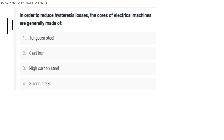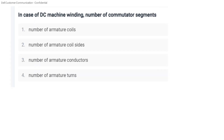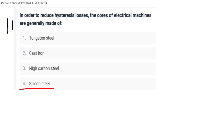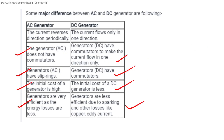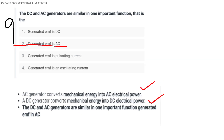In the last question, in case of DC machine winding, the number of commutator segments is equal to the number of armature coils. We have to ask the theory class in DC machines — we will share the theory class in the group, especially for our mechanical students. If you have important questions to ask in the live class, please share the video, like, and subscribe. Thank you.